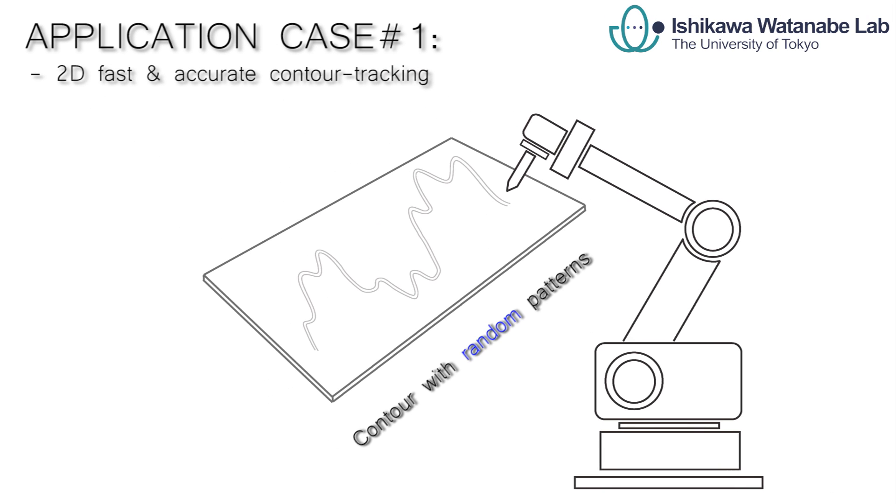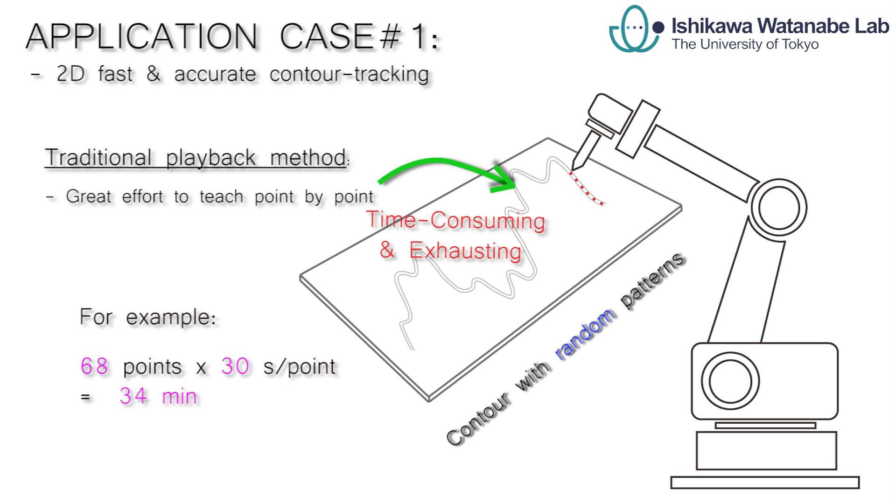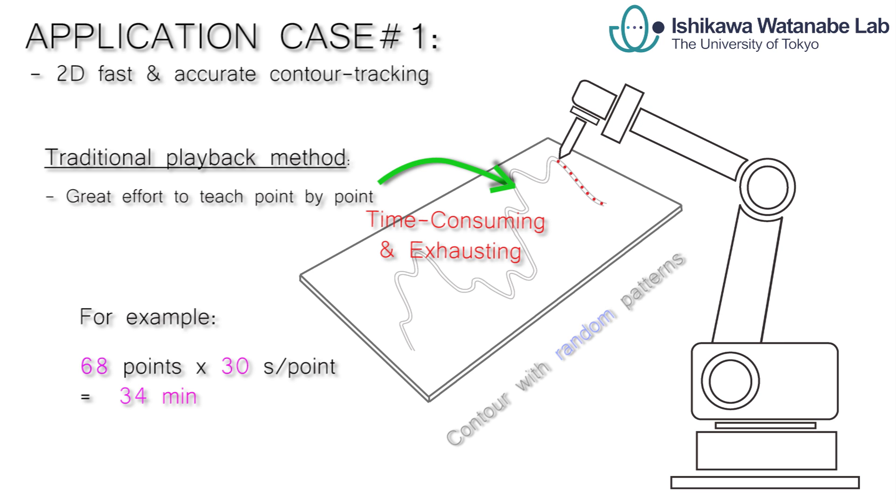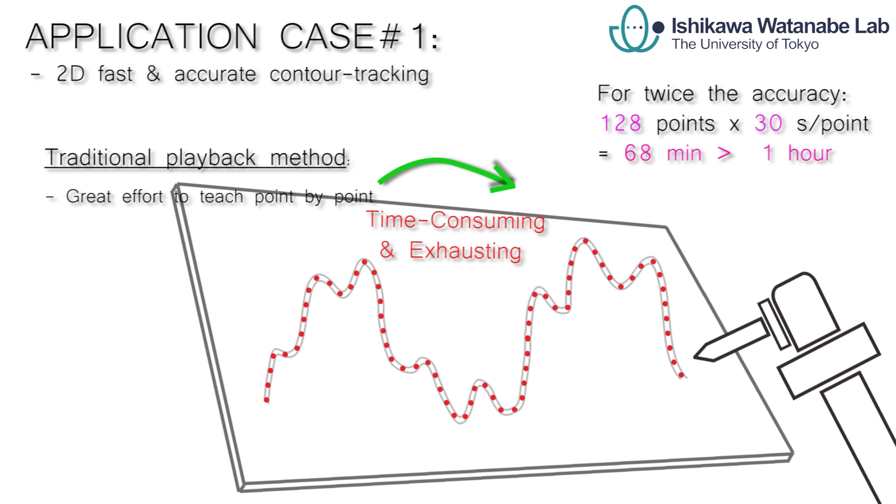This technology can be used for fast and accurate contour tracking. Traditionally, the playback method is the most common approach to control an industrial robot. However, it is time-consuming and exhausting to teach an accurate path point-by-point.